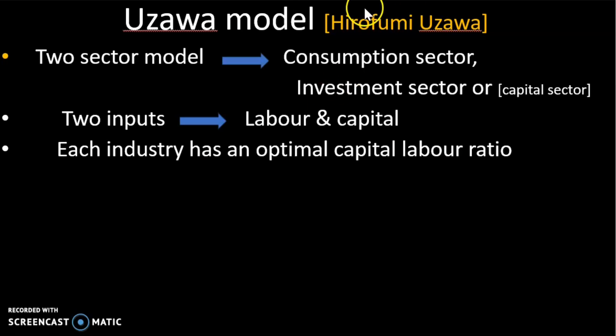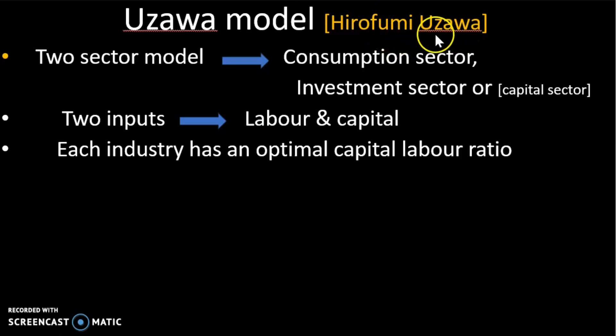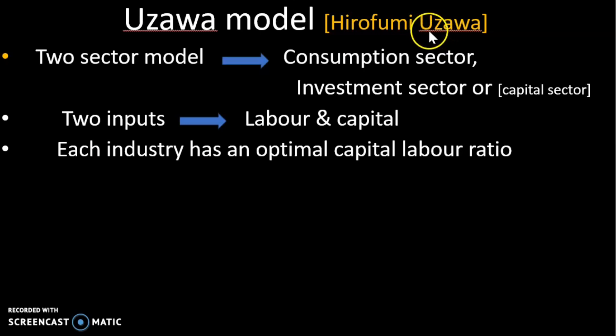We are going to go to the Uzawa model. This is a Japanese economist, Hirofumi Uzawa. This model is developed as a neoclassical model — the Solow-Swan model is an extension model.